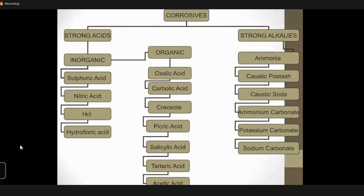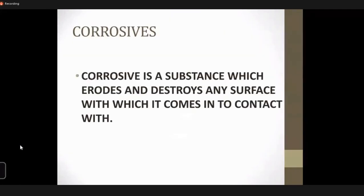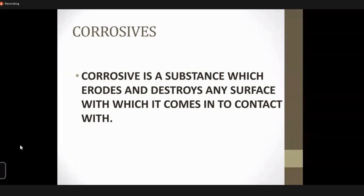The strong alkalis include ammonium hydroxide, caustic potassium soda, and others such as ammonium carbonates and sodium carbonates. Now the mechanism of action — you have to understand that only strong acids and strong alkalis act as corrosives, while the dilute acids and alkalis just act as irritants.